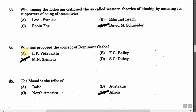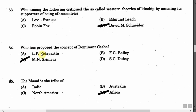The next question is: Who has proposed the concept of dominant caste? Option A: L.P. Vidyarthi. Option B: F.G. Bailey. Option C: M.N. Srinivas. Option D: L.C. Dube. The correct answer is Option C, that is M.N. Srinivas.